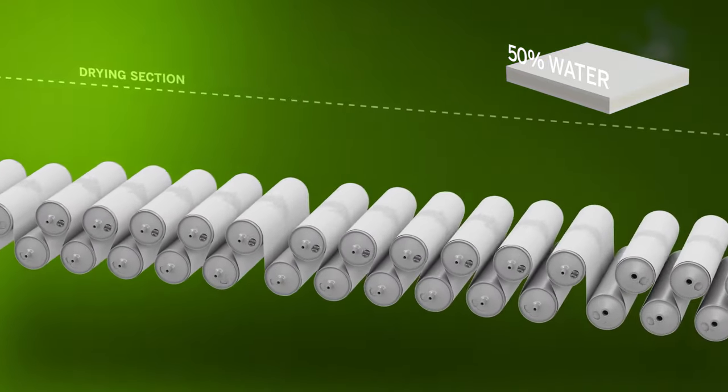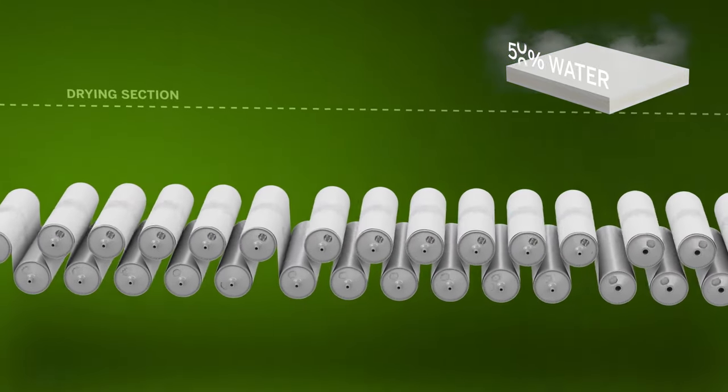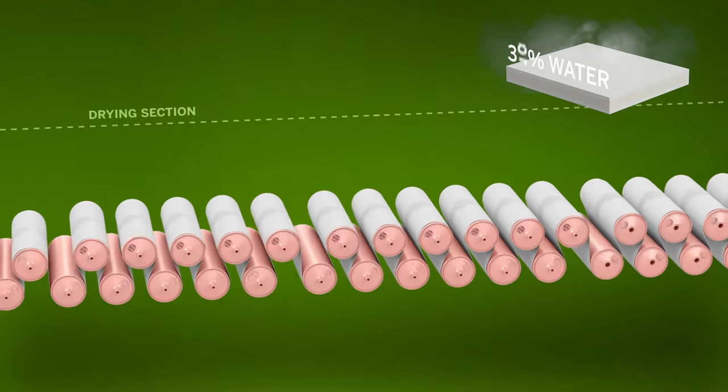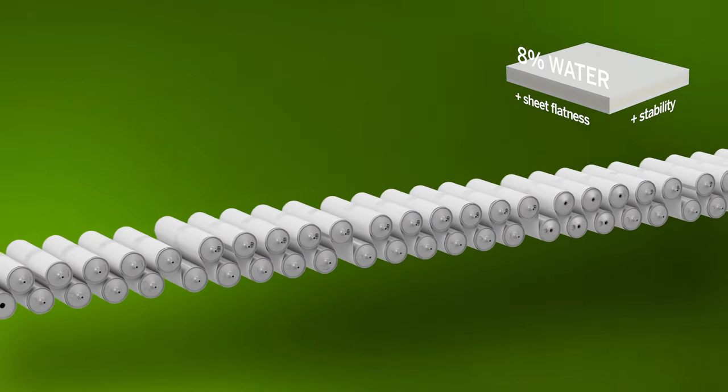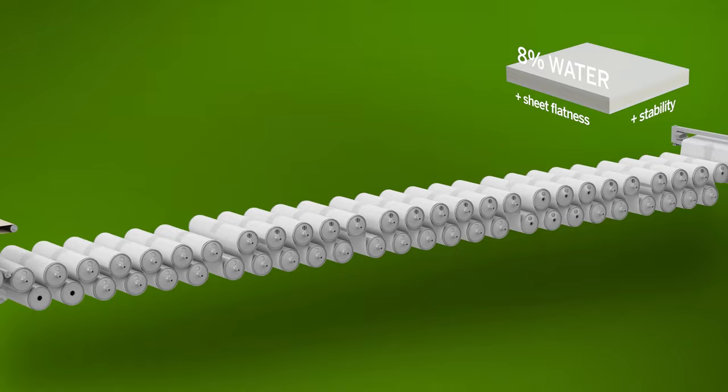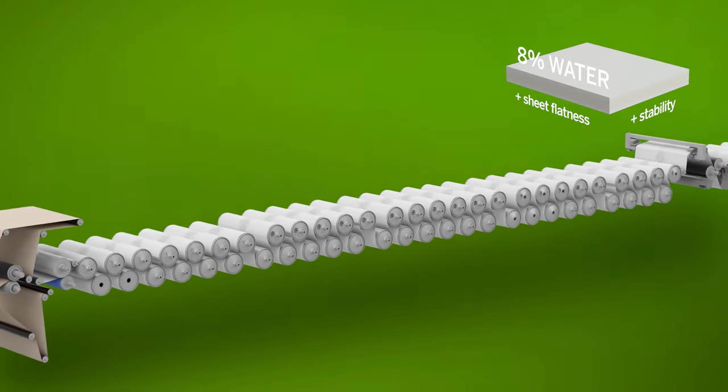In the drying section, the web is passed around hot drying cylinders, removing more water through evaporation. Effective drying ensures good sheet flatness and stability, which in turn ensures good runnability in printing and converting.